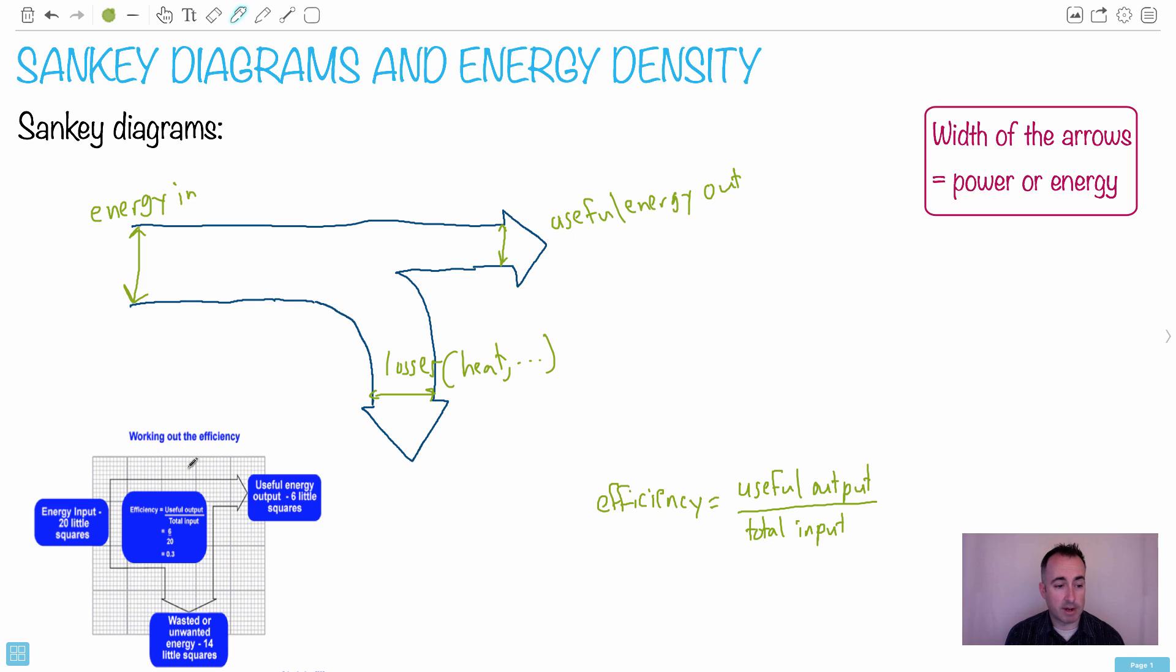I've got a little example here that I've cut and pasted. So the energy input for example is 20 little squares. It doesn't even matter what units those were. Let's just say this here was 20. And let's say then this, the useful energy out, was 6. And of course we wasted, these have to add up, so this here for example will be 14. Let's just say those are the numbers that we'd put in.